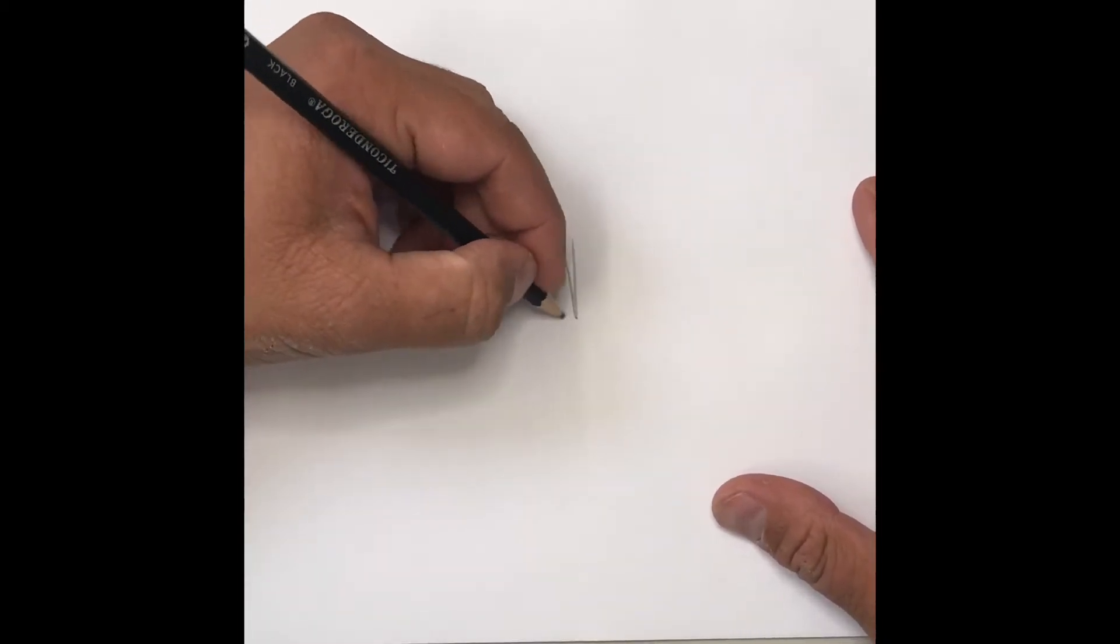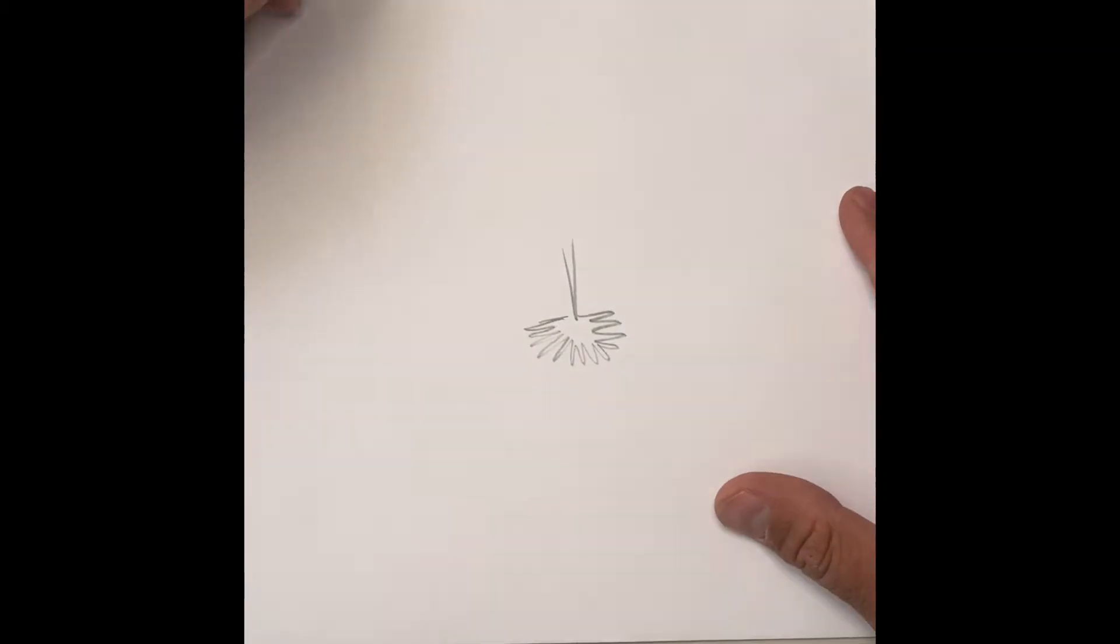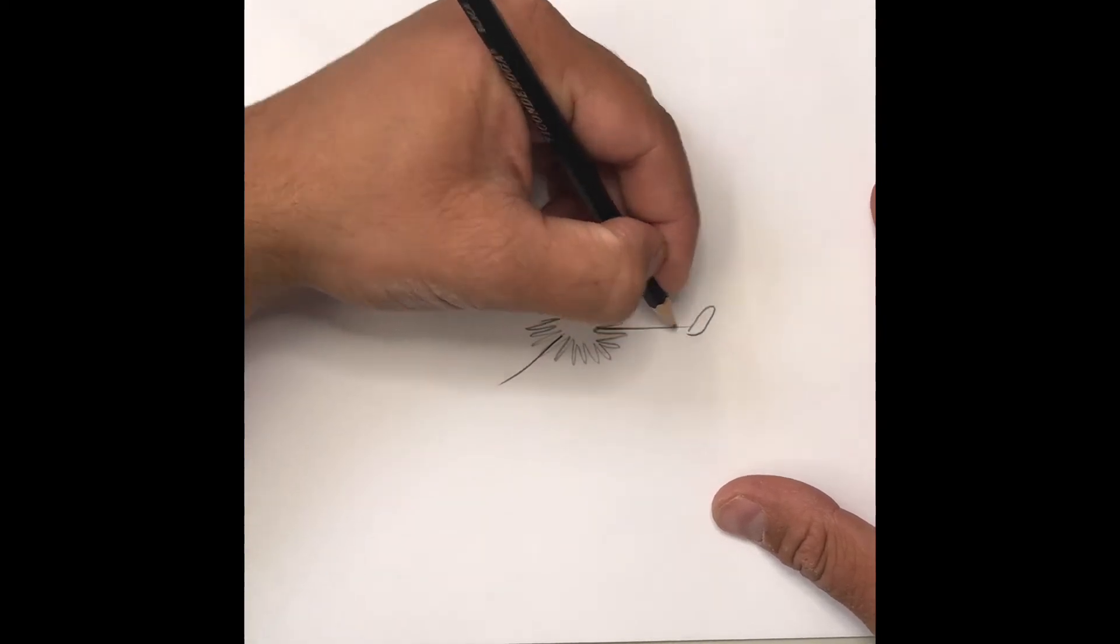Start with a simple body, then we have the skirt, drawn very simply as a zigzaggy line. And because she's jumping super high, her feet are going to be